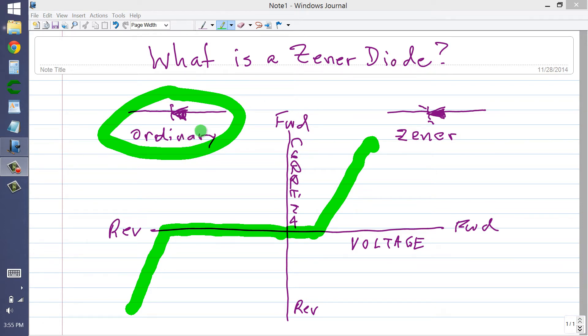A Zener diode is basically an ordinary diode with one specific difference. Now when I talk about an ordinary diode, let's just, for the sake of an example, think of a silicon rectifier.